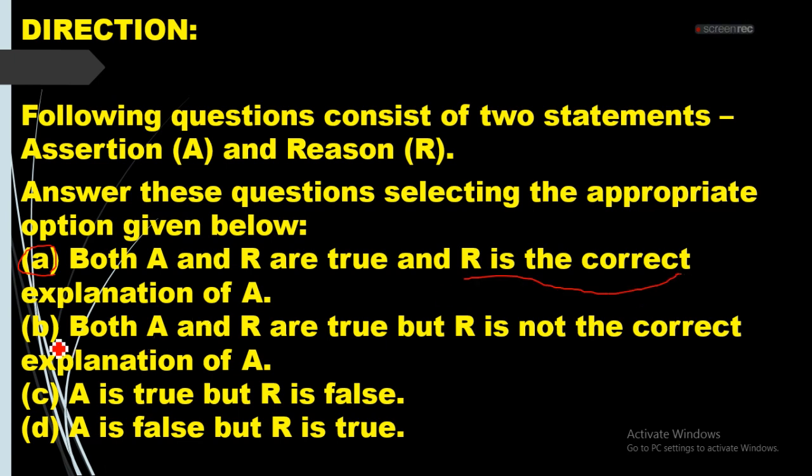Option B. When we choose B, when A and R are true but R is not the correct explanation, then we are choosing B option.